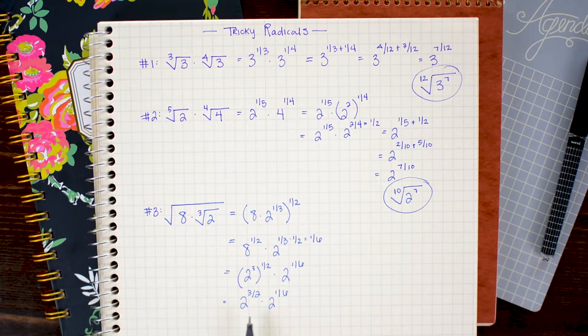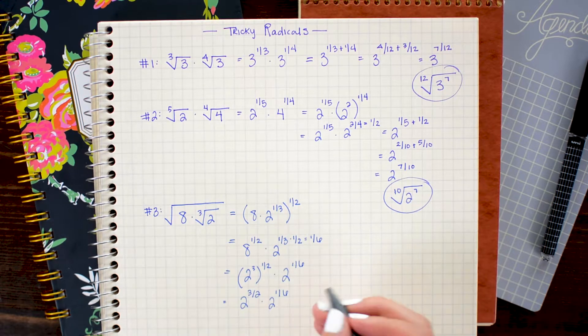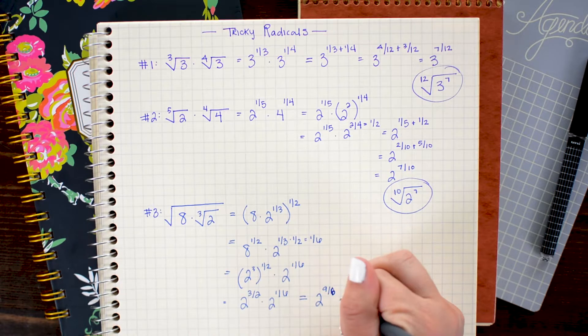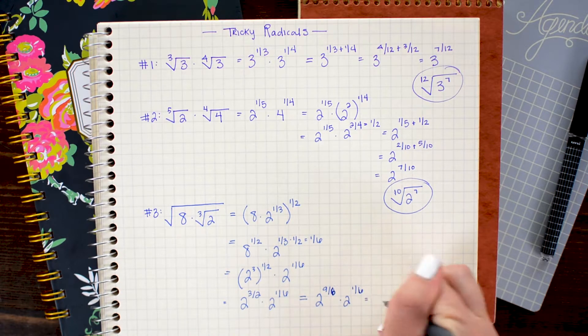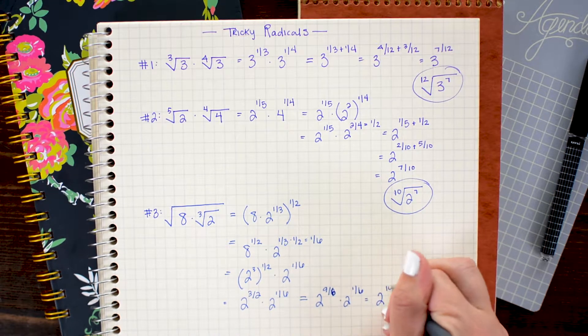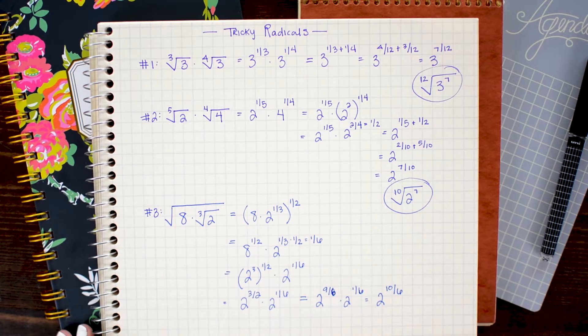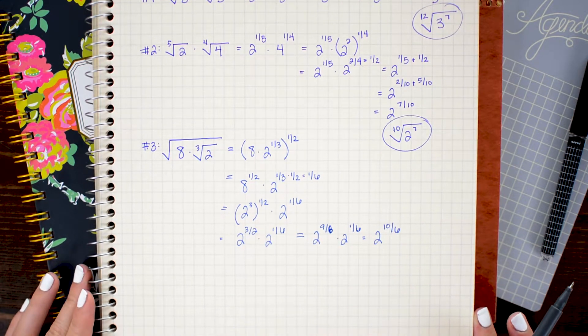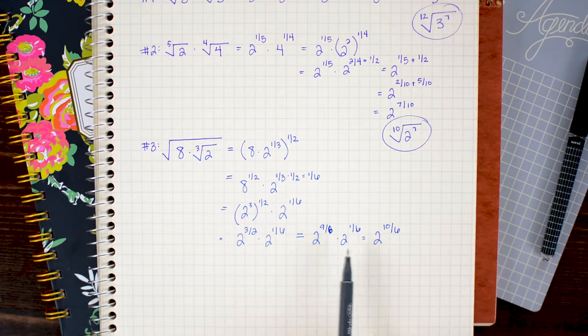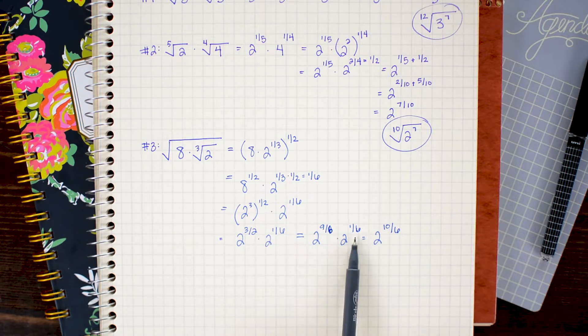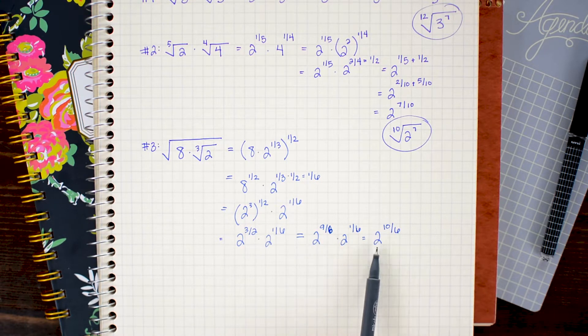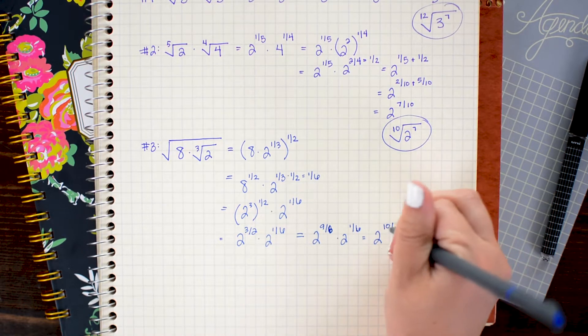Now all I need to do is add the exponents to multiply these together. Doing that I get 2 to the 9/6 times 2 to the 1/6 which is 2 to the 10/6. And of course 10/6 can be reduced down to 5/3 so I'm just going to do that.